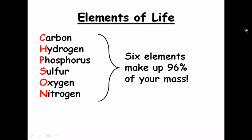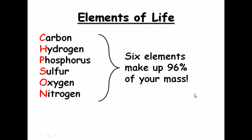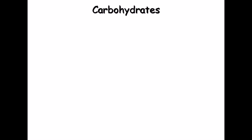What are the elements of life? There are six elements of life which make up the maximum part of life. They are carbon — in any organic situation carbon is the most commonly found element — then hydrogen, phosphorus, sulfur, oxygen, and nitrogen. These elements consist of almost 96 percent of our mass.